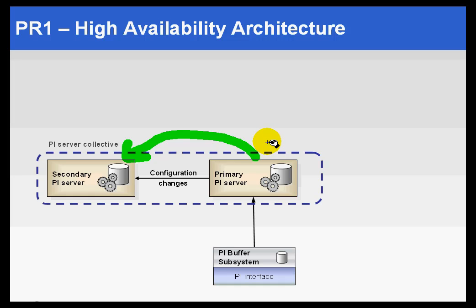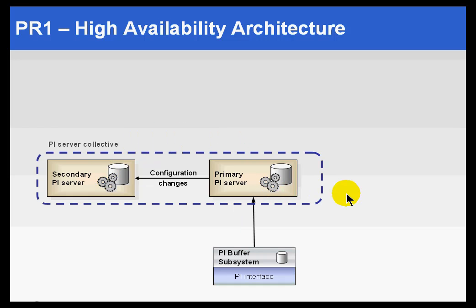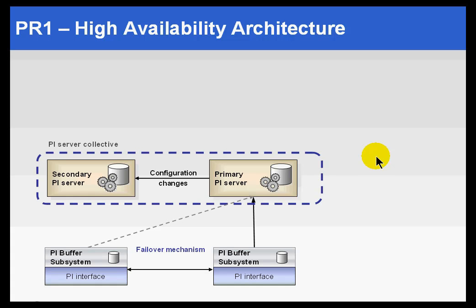What we haven't addressed yet is that we're only moving configuration to the secondary. The data — which is coming in from the interface — is not replicated from the primary to the secondary. Instead, we need another mechanism. The mechanism we've chosen to use is what we call N-Way buffering.